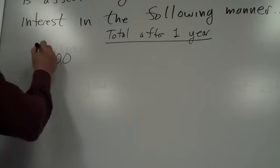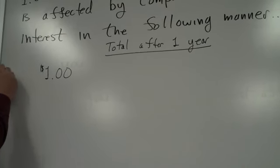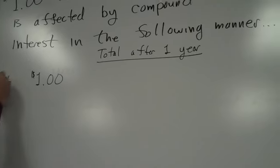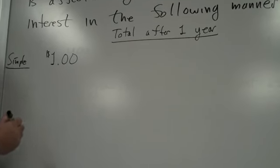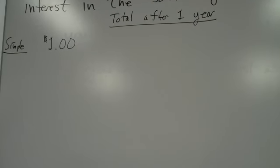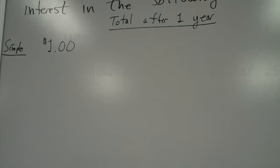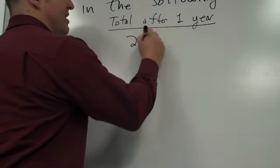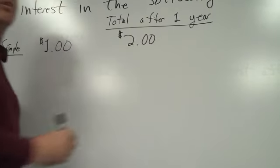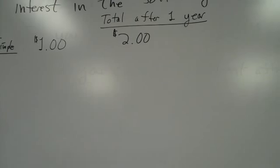So we start with $1. And if we do simple interest, what do you get? You don't need to calculate it for this. You have $2 at the end of the year. Because 100% interest means you double your money, right?